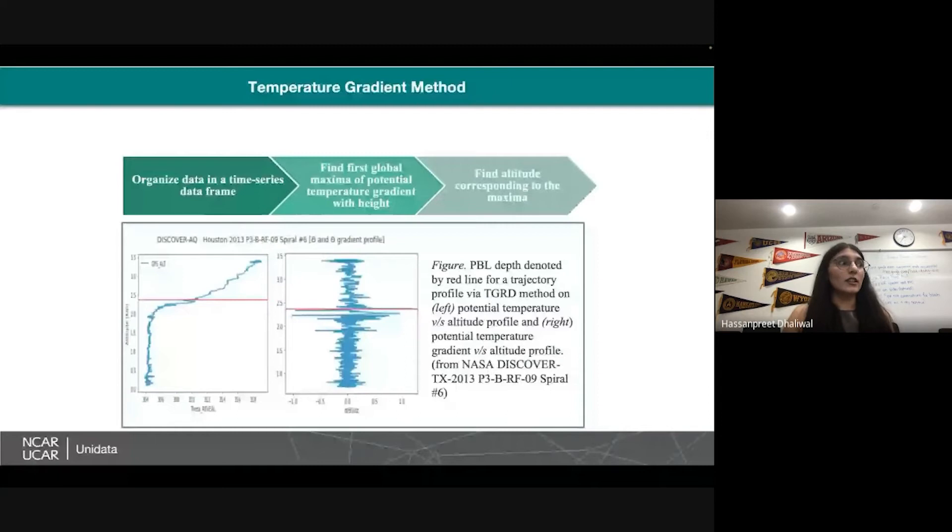This is how it looks. I played around with the NASA Discover data. It was a field project which happened in Texas and California. These are the flight profiles, really beautiful, high frequency, nice data. You can see the red line tells you the boundary layer information. The first figure is the potential temperature vertical profile. The next one is potential temperature gradient vertical profile. As you can see, wherever this gradient is maximized is where boundary layer happens.